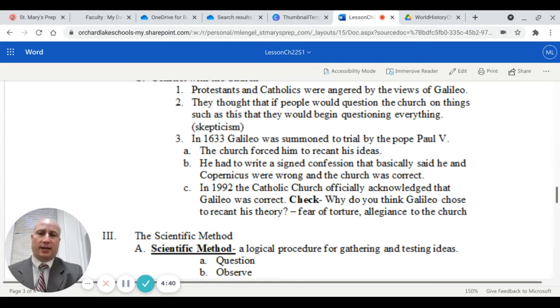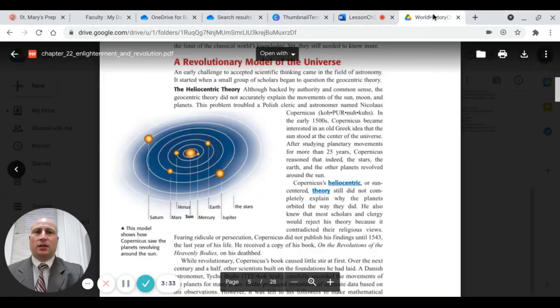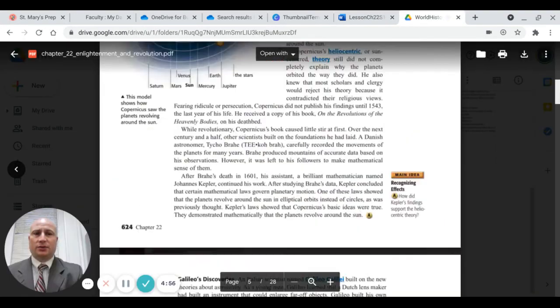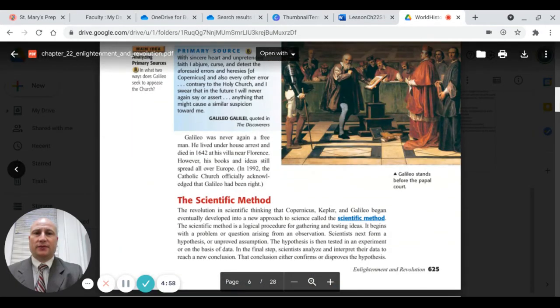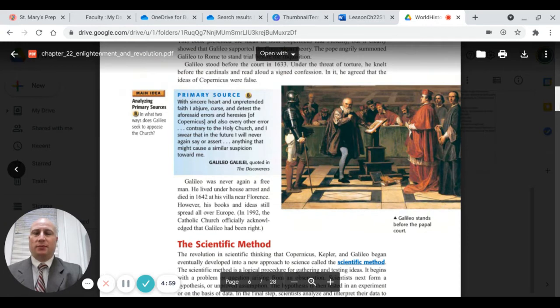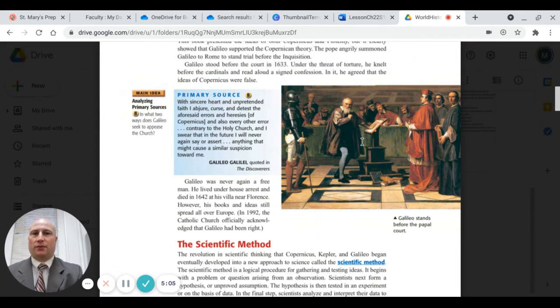Why do you think Galileo chose to actually recant his theory? I would say because of fear of torture. And he was a Catholic. He had some allegiances to the church. These were things that were perplexing to him. It is said that while he was signing the document that the church made him sign, he was known to have said, yet it moves, meaning that it's the earth that moves, not the sun. Here's Galileo at the papal court before Paul V.